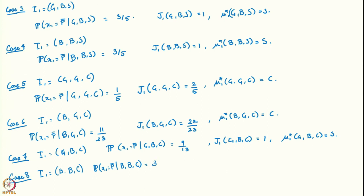In the final case, when the information is BBC, the probability of x1 equal to p-bar is 33/37, and the optimal action in state BBC is to stop, with the cost to go equal to 1. Here I have written out all these remaining cases, cases 3 through 8.